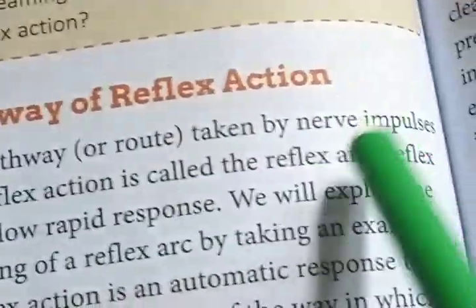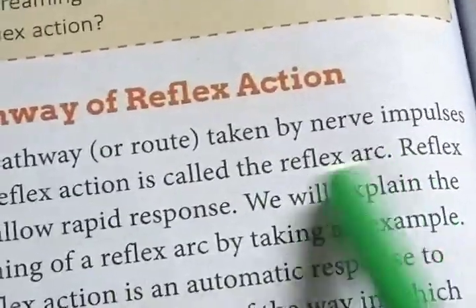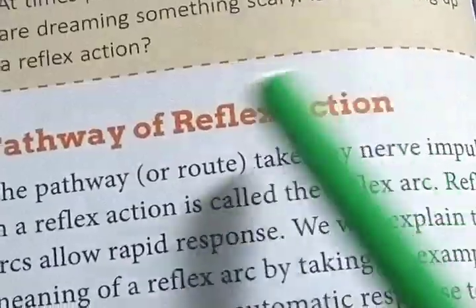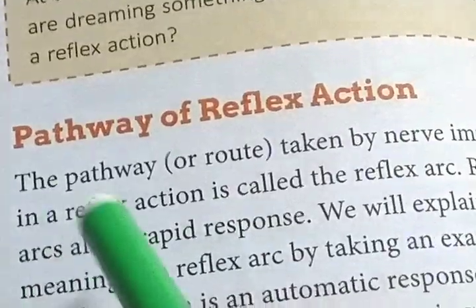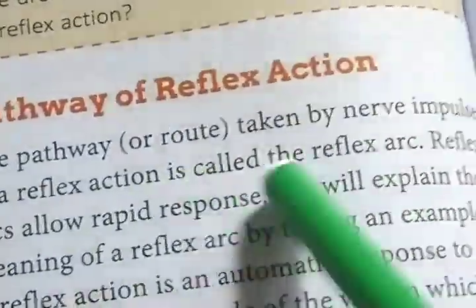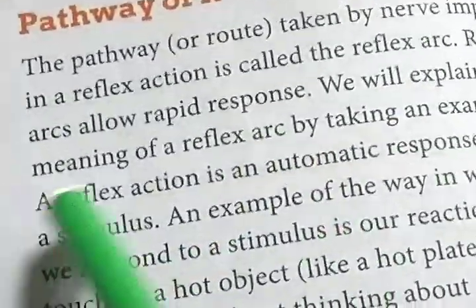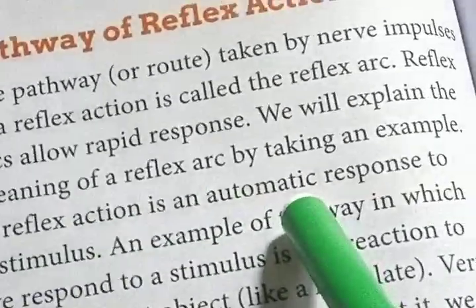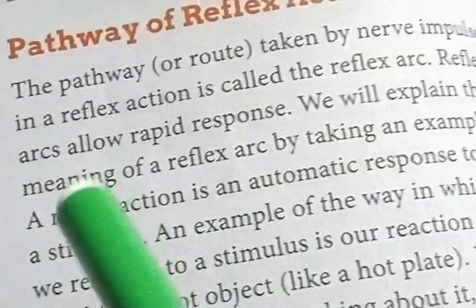The pathway or route taken by nerve impulses in a reflex action is called a reflex arc. This path along which the nerve impulse travels is known as reflex arc. A reflex arc allows a rapid response. A reflex action is an automatic response to a stimulus; it is not controlled by the brain.